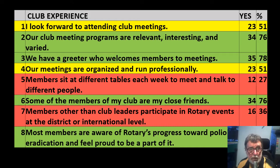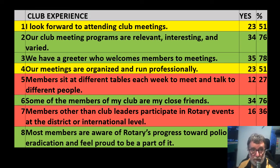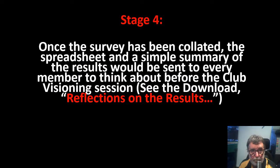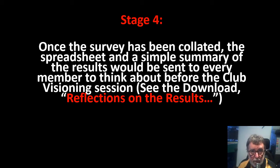An Excel expert could easily allow graded responses to each question — for example, four possible responses like definitely, usually, sometimes, or rarely. But a simple yes was enough for us to get a trend as to how members were feeling about various aspects of the club experience. Once the survey has been collated, the spreadsheet and a simple summary of results would be sent to every member to think about before they attended a club visioning session, which is stage five.